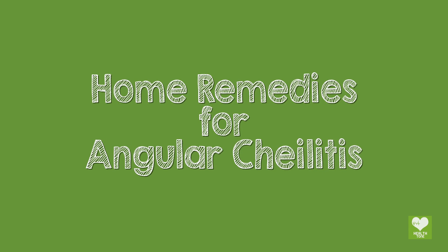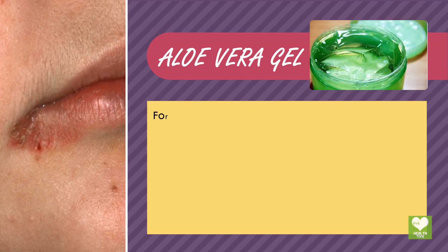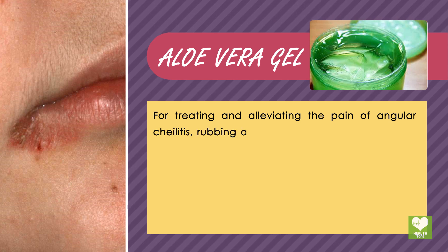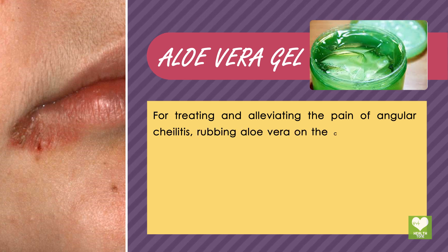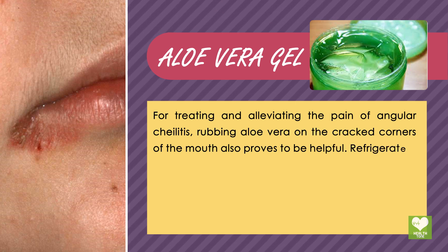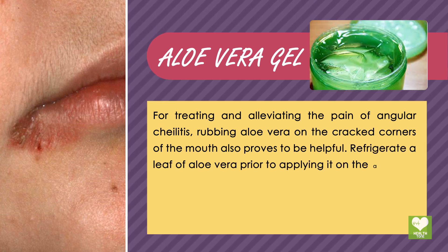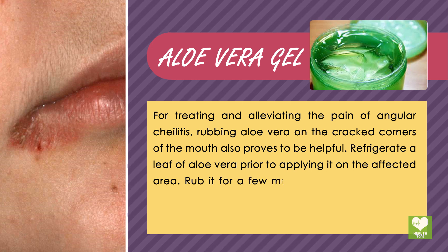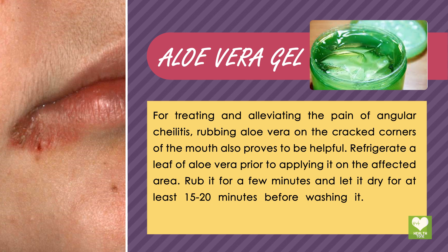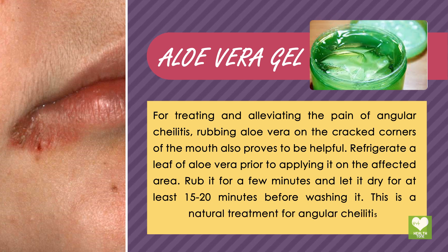Home Remedies for Angular Cheilitis: Aloe Vera Gel. For treating and alleviating the pain of angular cheilitis, rubbing aloe vera on the cracked corners of the mouth proves to be helpful. Refrigerate a leaf of aloe vera prior to applying it on the affected area. Rub it for a few minutes and let it dry for at least 15-20 minutes before washing it. This is a natural treatment for angular cheilitis.